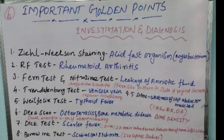Third point: Fern test and Nitrozine test — both used to find out leakage of amniotic fluid. In the Fern test, a fern-like pattern is present in the glass slide of vaginal secretion. In the Nitrozine test, there is a change of color of the strip due to the pH level of the amniotic fluid.